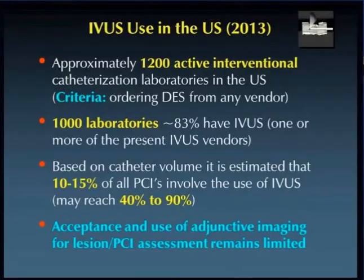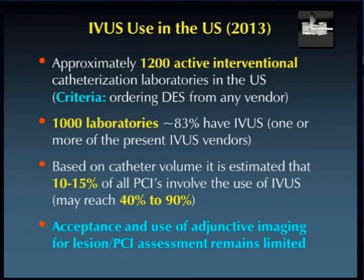In 2013, there were about 1,200 active interventional cath labs in the U.S., and about 1,000 — over 80% — have IVUS from one or more vendors. But based on catheter volume, it's estimated that no more than about 15% of all PCIs use IVUS, although in certain institutions with training programs it may reach between 40% and 90%. So despite this mountain of data, acceptance and use of adjunctive imaging for intermediate lesion assessment is still quite limited.